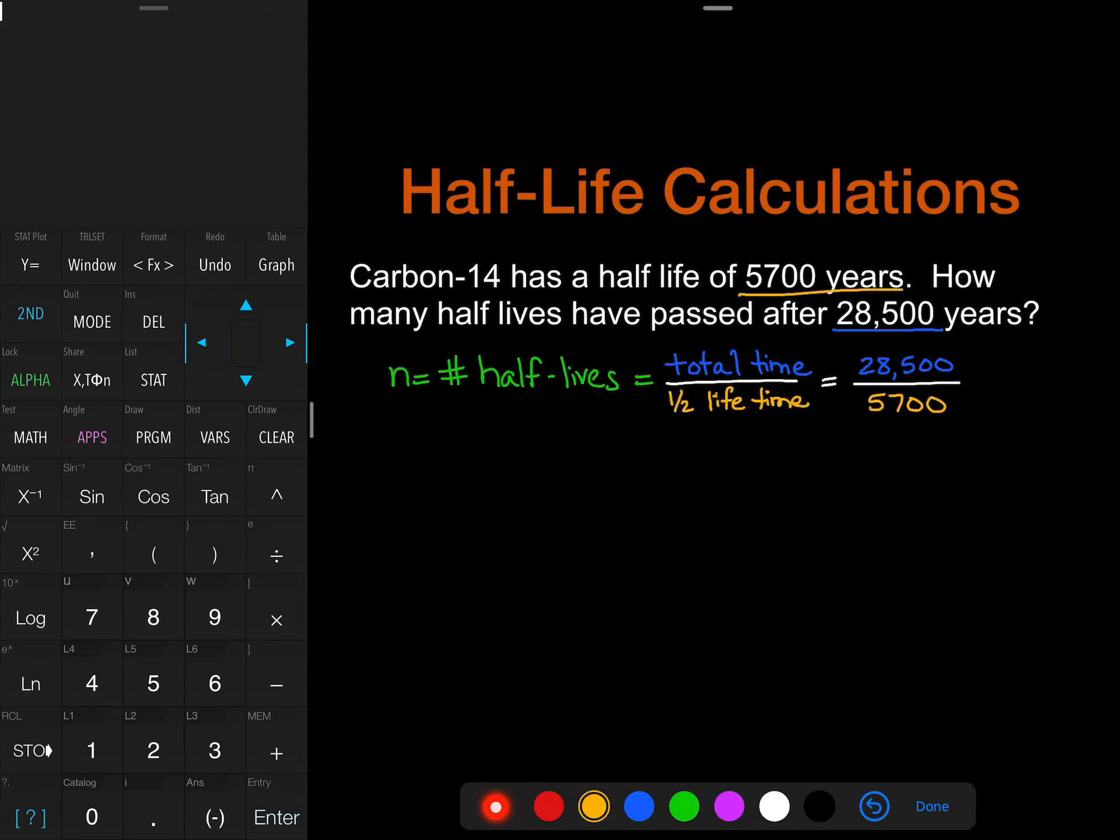Okay, there's my number, sorry. I lost them there for a minute. So 28,500 divided by 5,700 and that gives me a value of 5. So that gives me 5, so that means 5 half-lives have passed.